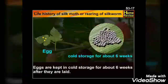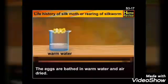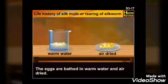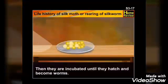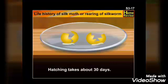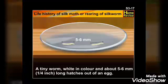Eggs are kept in cold storage for about six weeks after they are laid. The eggs are bathed in warm water and air dried, then incubated until they hatch and become worms. Hatching takes about 30 days.